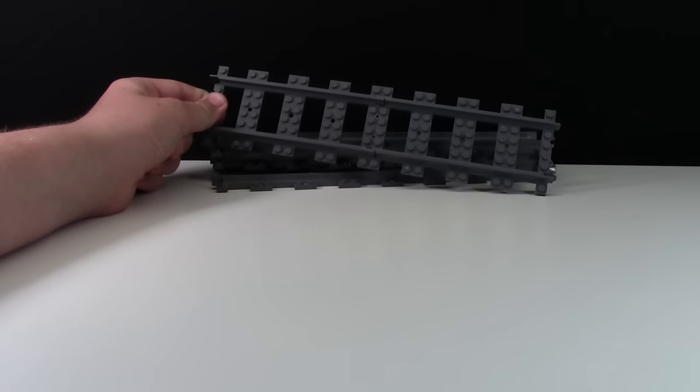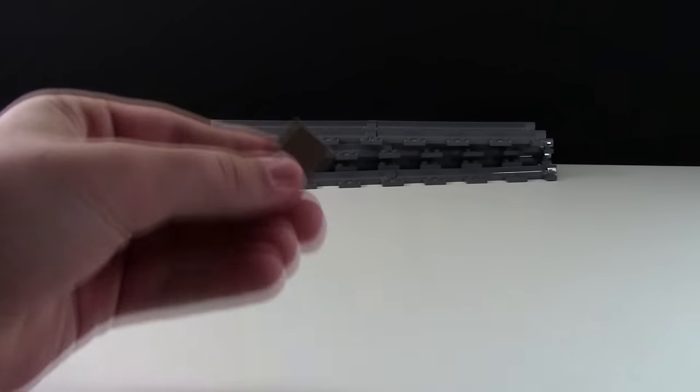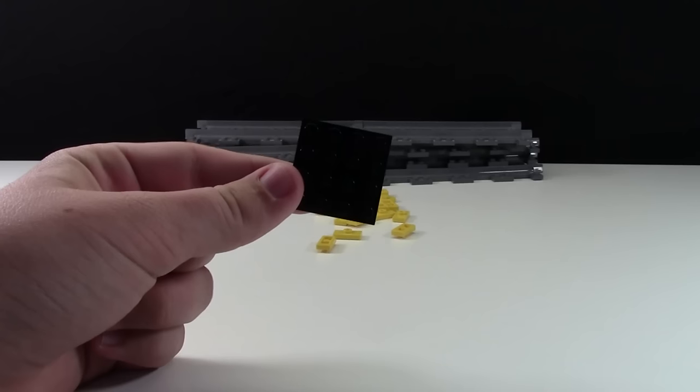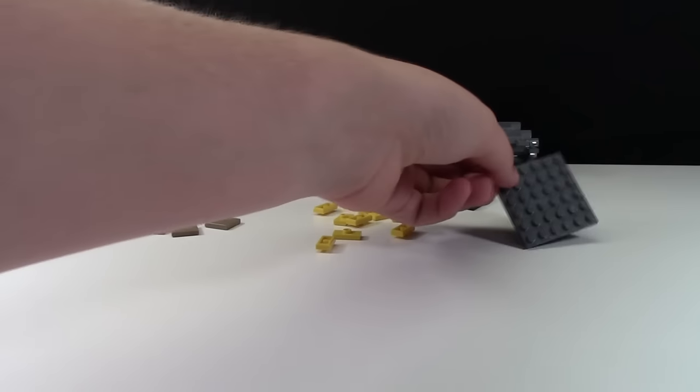To make this you'll need some LEGO train track, 16 2x4 tiles in any color, 16 1x2 jumper plates, a 4x4 plate, a 6x6 plate,